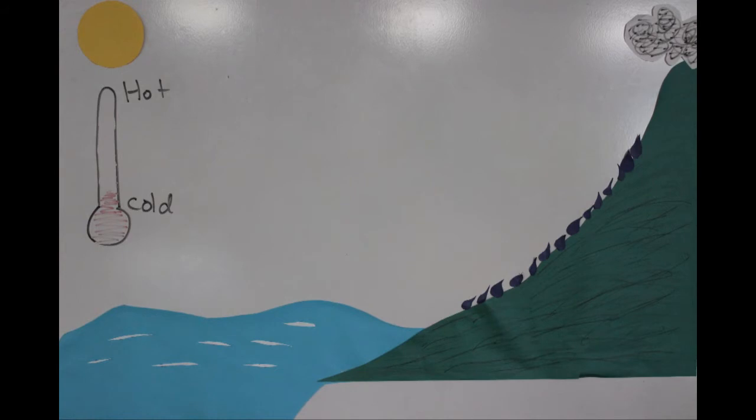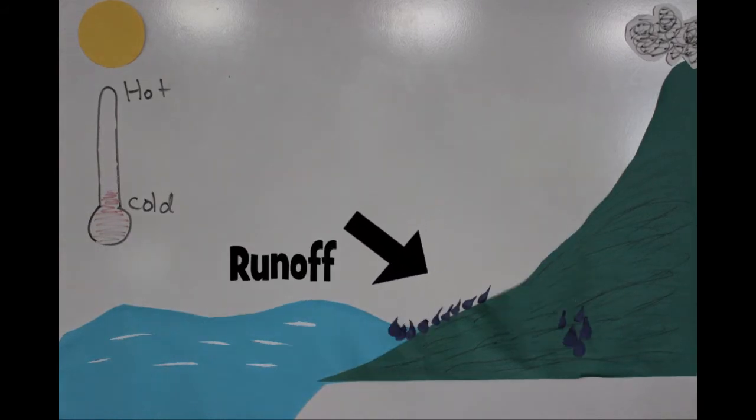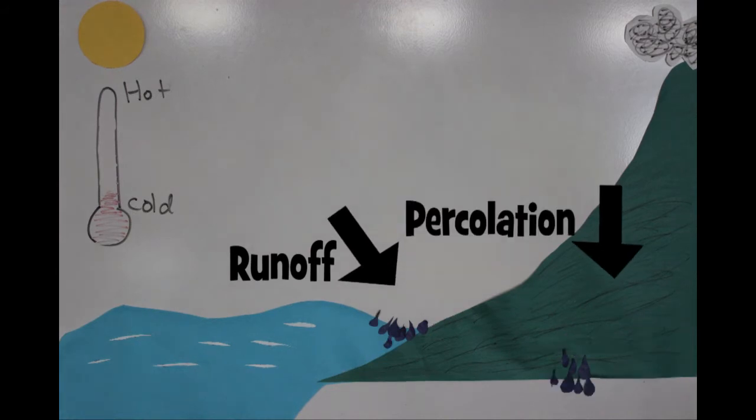The water runs into lakes, rivers, and oceans. This is called runoff. Some of it seeps through the ground as well. This is called percolation.